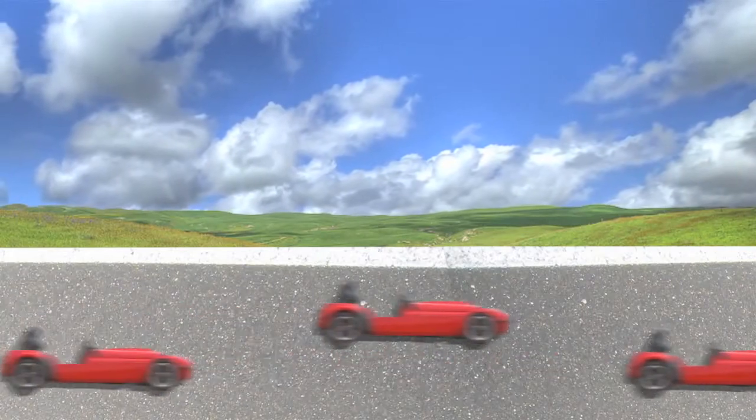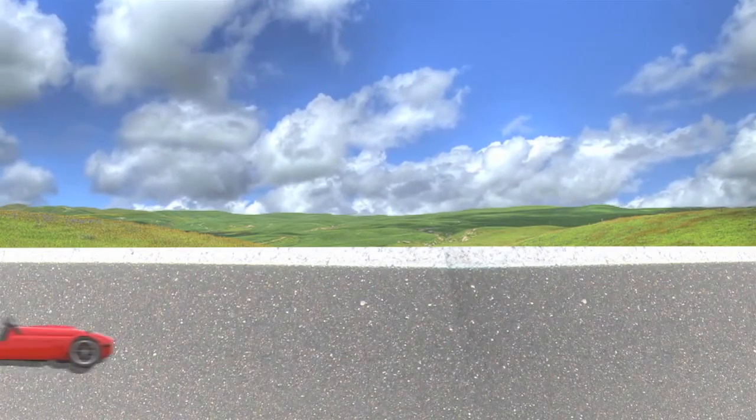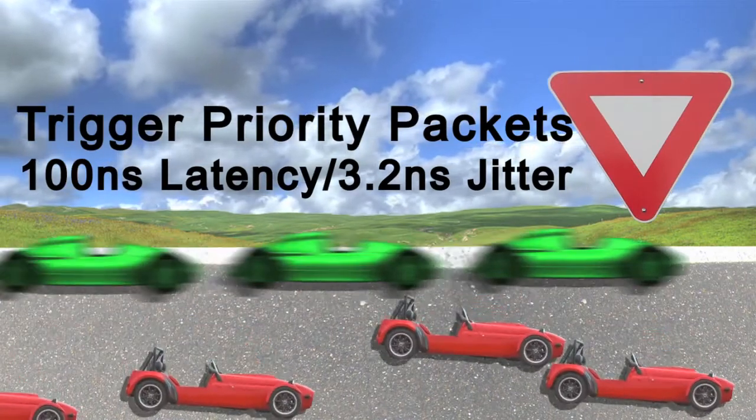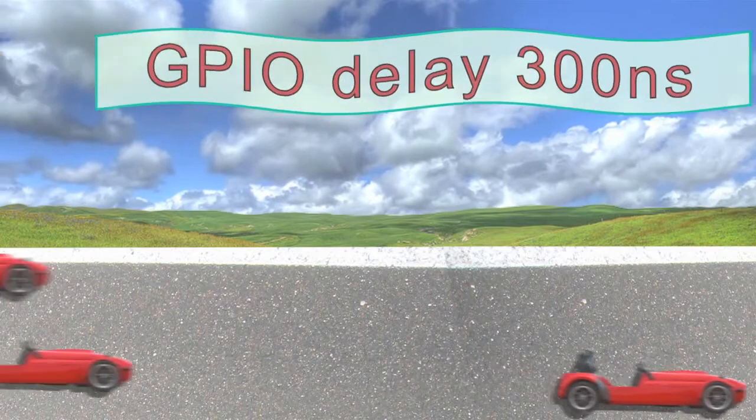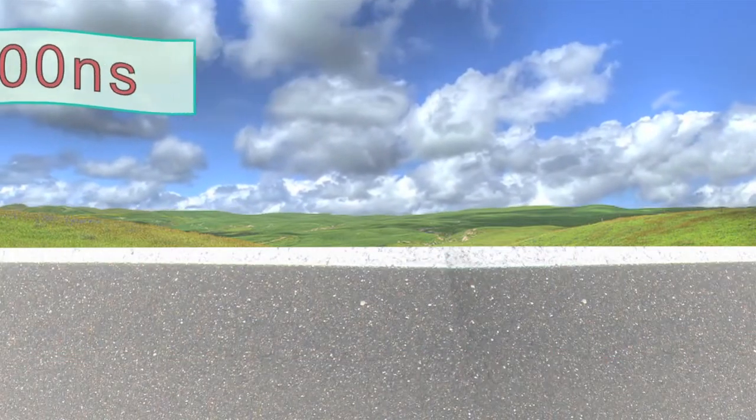Like CameraLink, CameraLink HS offers real-time trigger in the cable with a latency of about 100 nanoseconds and jitter of 3.2 nanoseconds. This is the best of any serial protocol.